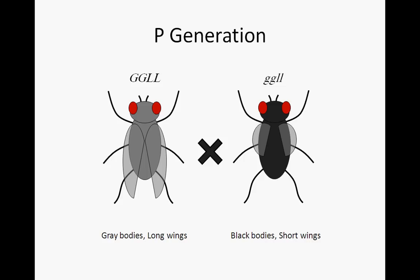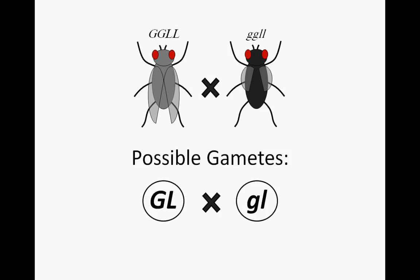Therefore, each fly can produce only one possible gamete with regard to body color and wing size. The gray, long-winged fly can produce big G, big L, while the black, short-winged fly can produce little G, little L. Remember, gametes with big G, big G or big L, big L are not possible, because the two alleles for a single trait must segregate, and the gamete must contain one copy of every gene.